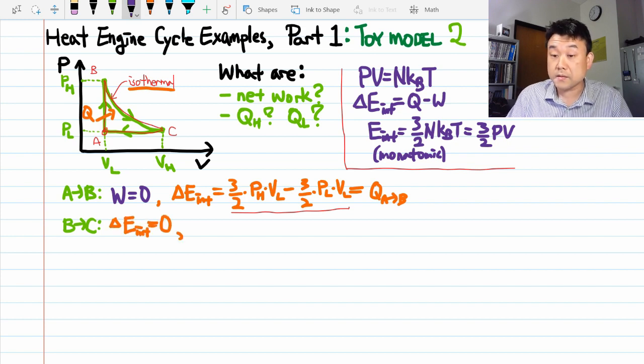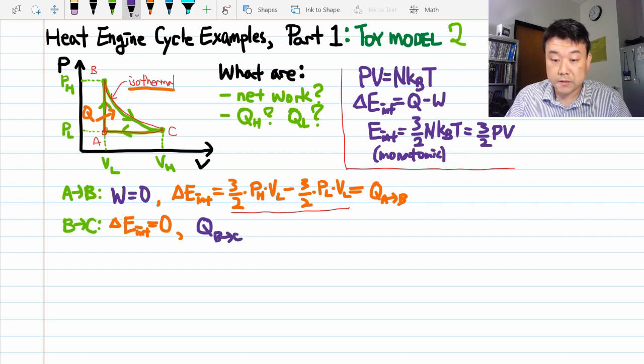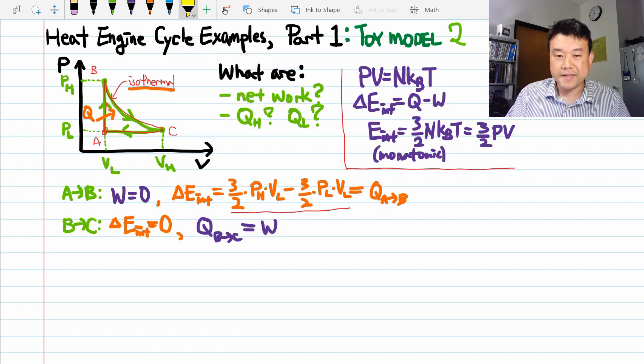So that means from the first law of thermodynamics, we can say the heat transfer from B to C is equal to the work done. Now, it's not that easy. There's a bit of a problem we have to work out here in that the pressure changes throughout this process. So we can't just say work done is pressure times change in volume.